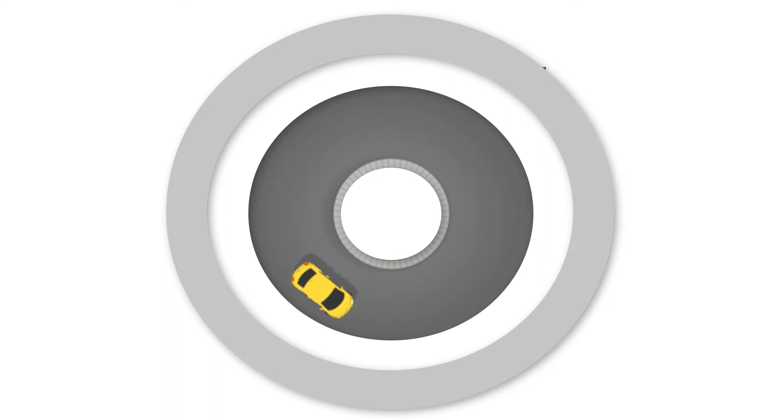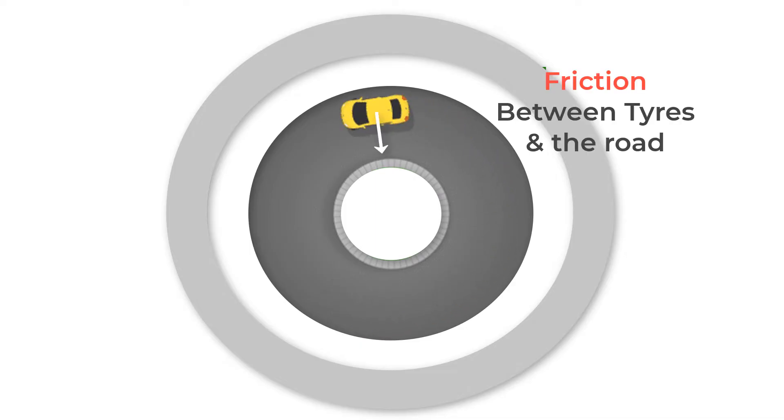Imagine driving a car on a circular track at high speed. The only thing keeping you from skidding off is the friction between the tires and the road. But what if suddenly that friction disappeared? Would you just slide off the track?